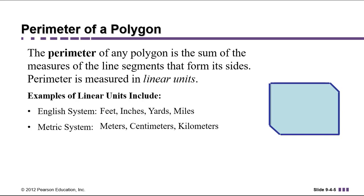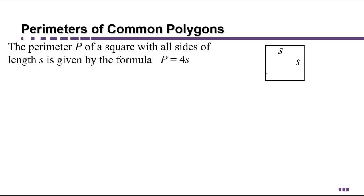The perimeter of a square where all sides are length s is given by p equals 4s. You can think of it as adding up s plus s plus s plus s, which equals 4s.